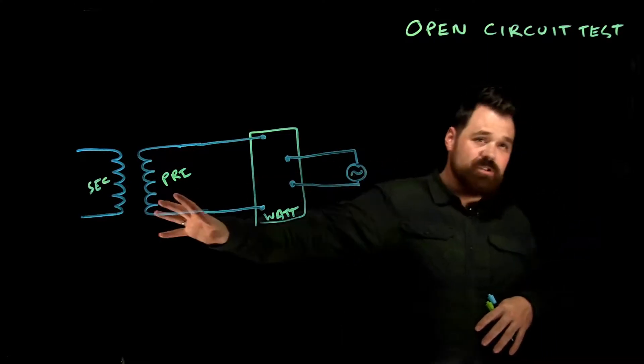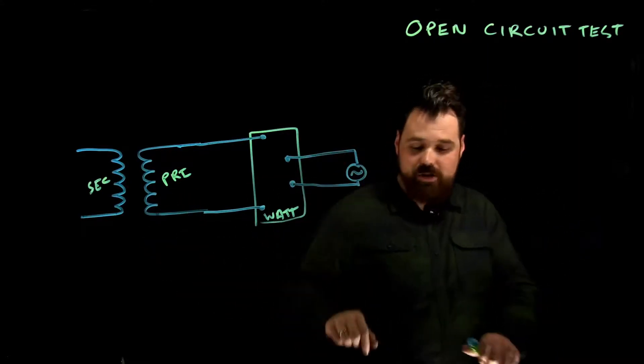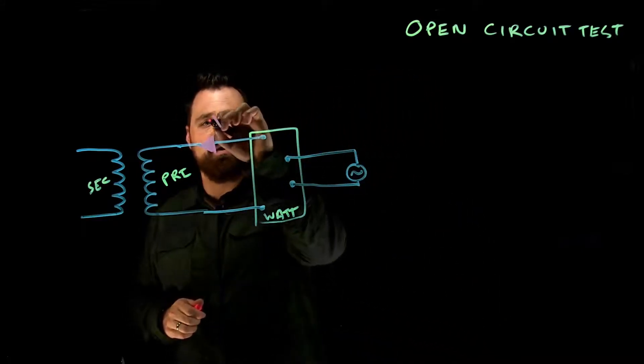Now, all we do when we energize it, we're going to get a small amount of current flowing on that primary, just to energize the core.